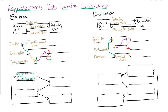Once data is placed on the data bus and data valid is enabled, as soon as the destination receives that information via data valid, destination will accept the data from the bus. As soon as it starts reading the data from the bus, destination will enable the data accepted signal.